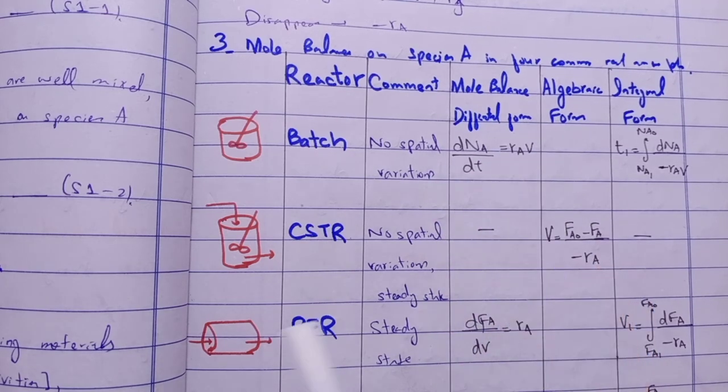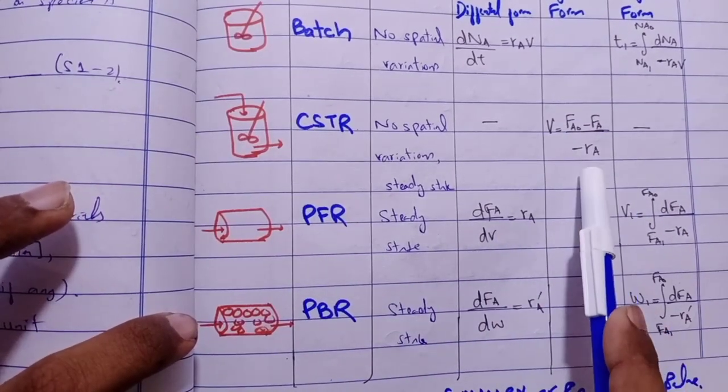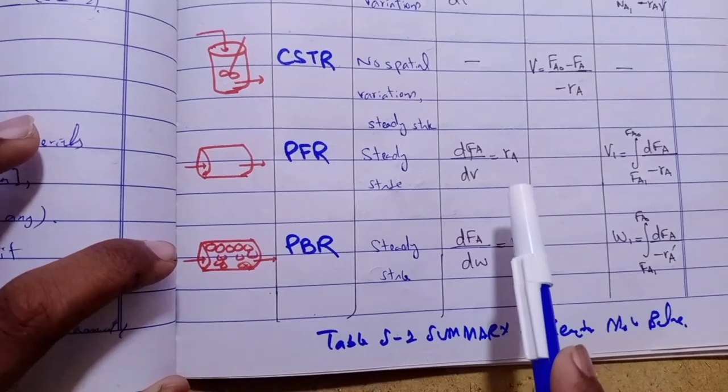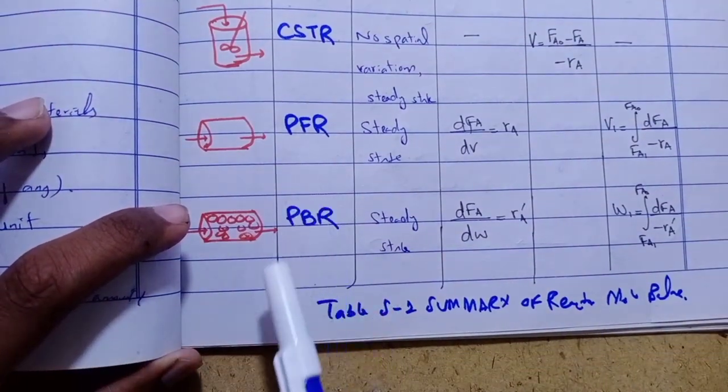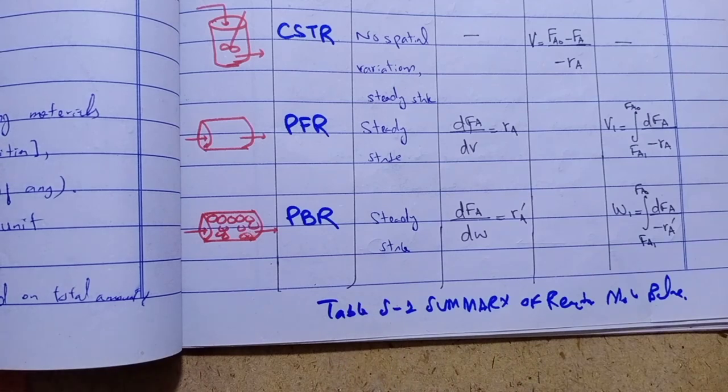The accumulation equals generation. In the CSTR is only in algebraic form. This is the PFR equation. Basically PFR and PBR difference is dV and dW. Please remember this and don't confuse about this.